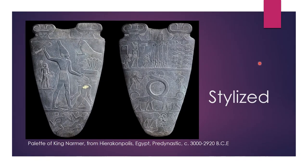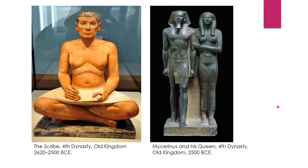This is the Palette of Narmer, and this is showing stylism. Stylized figures are not anatomically correct, but that's done on purpose. It's not that the Egyptians couldn't make it more naturalistic — they were doing it on purpose. Look here: these are contemporaries, both fourth dynasty, and one is very stylized while the other is much more naturalistic.